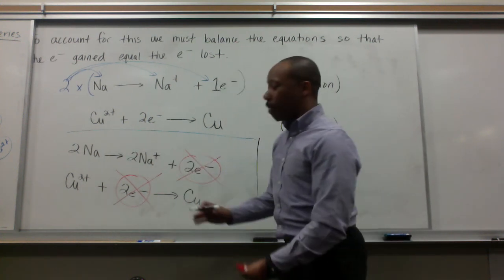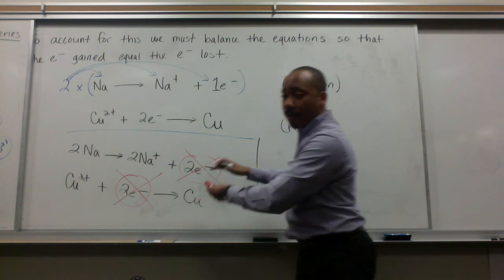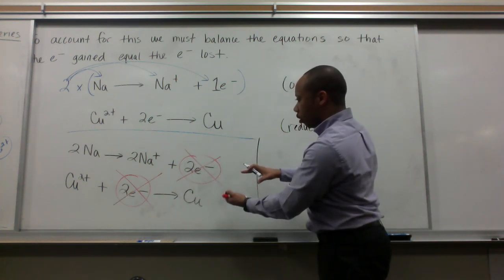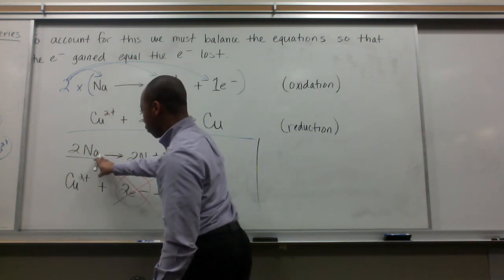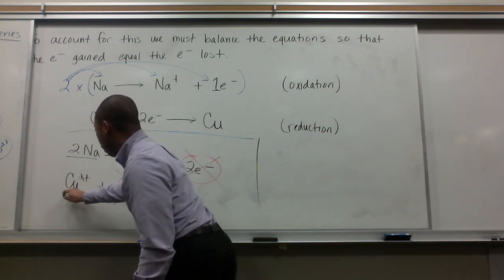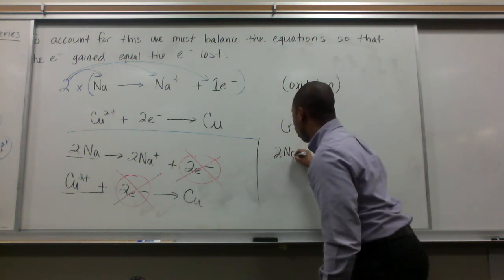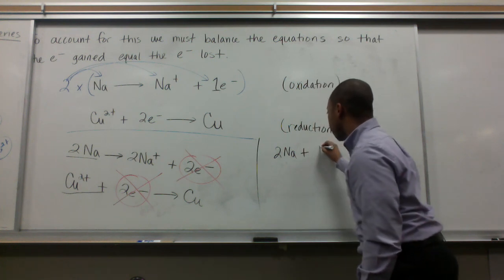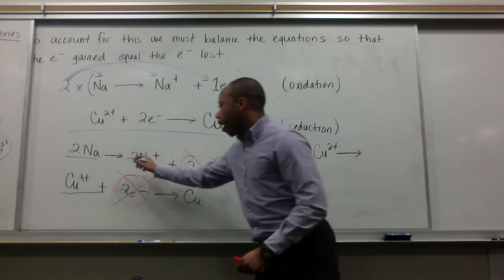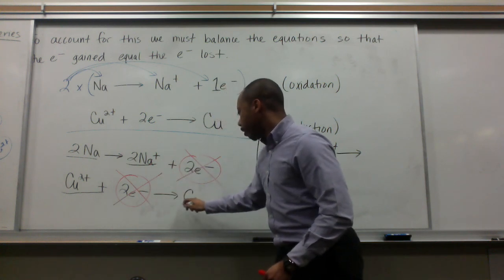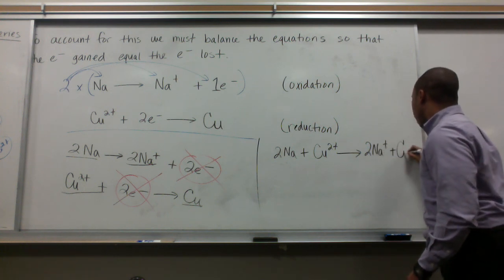If I add these two up, I add everything on the reactant side in both half reactions. I add everything on the product side in both half reactions. In my reactant side, I have 2 Na and copper 2 plus. I'm ready for the products. I have 2 Na plus and elemental copper.